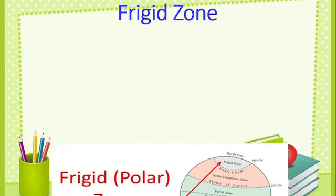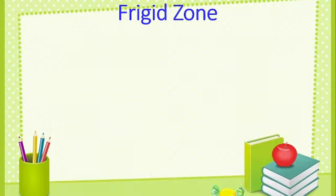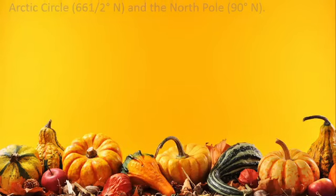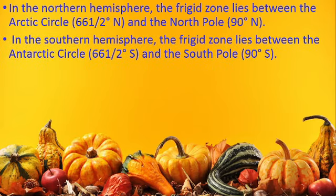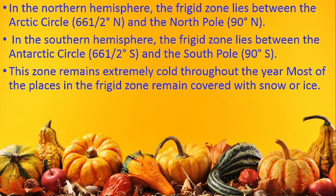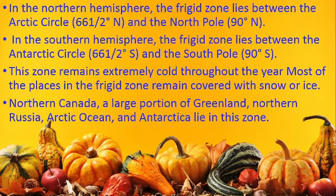Now we are going to learn about the Frigid Zone. In the northern hemisphere, the Frigid Zone lies between the Arctic Circle and the North Pole. In the southern hemisphere, it lies between the Antarctic Circle and the South Pole. This zone remains extremely cold throughout the year, and most places remain covered with snow or ice. Northern Canada, large portions of Greenland, northern Russia, the Arctic Ocean, and Antarctica lie in this zone.